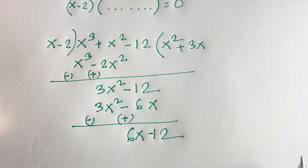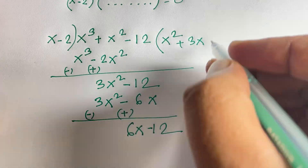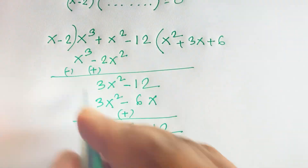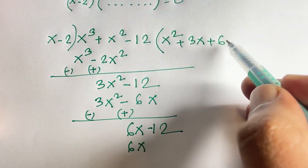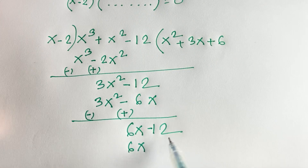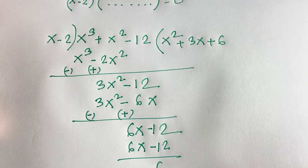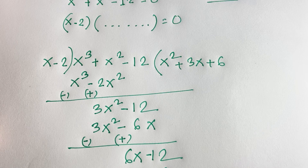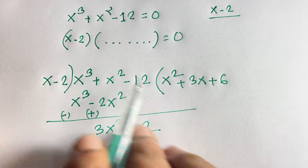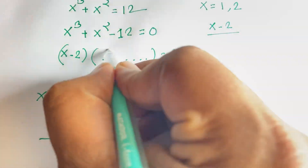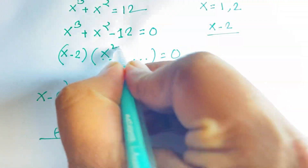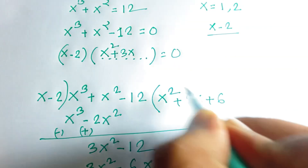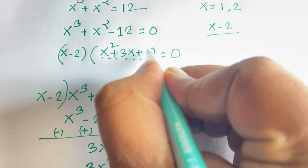Now at this point, if we put positive 6: 6 times x is 6x, and 6 times 2 is 12, so the remainder is 0. Therefore the full factor is x squared plus 3x plus 6 is equal to 0.